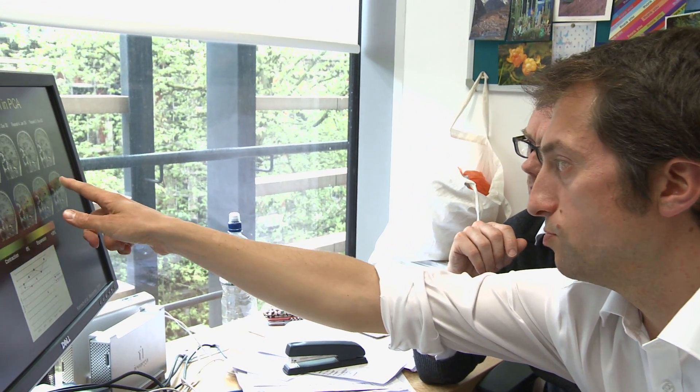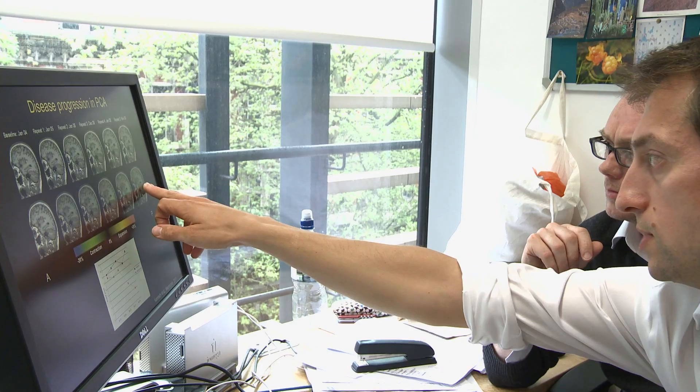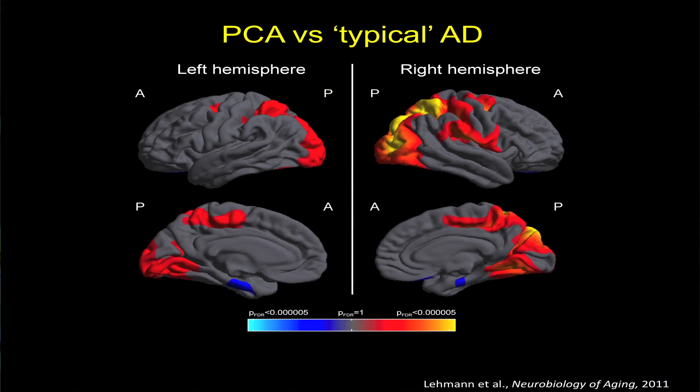I'm Sebastian Crutch and I'm a neuropsychologist and Alzheimer's Research UK Senior Research Fellow based at the Dementia Research Centre at UCL's Institute of Neurology. At the Dementia Research Centre we specialise in working with people with rare, atypical or young onset dementias, and in this project we're going to be focusing upon applying the techniques Danny was referring to, to a group of people with a condition called posterior cortical atrophy or PCA, which is often referred to as the visual variant of Alzheimer's disease.